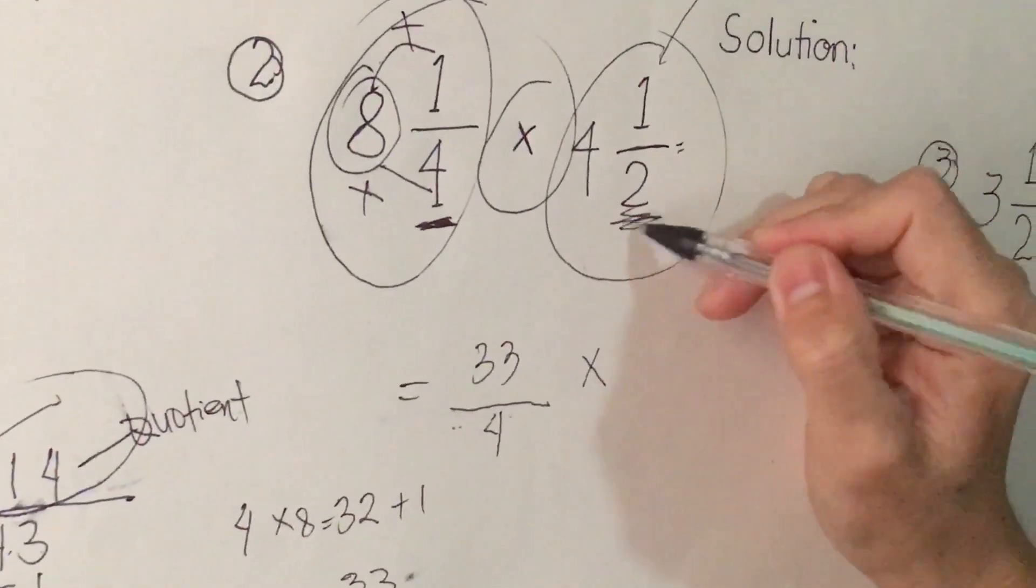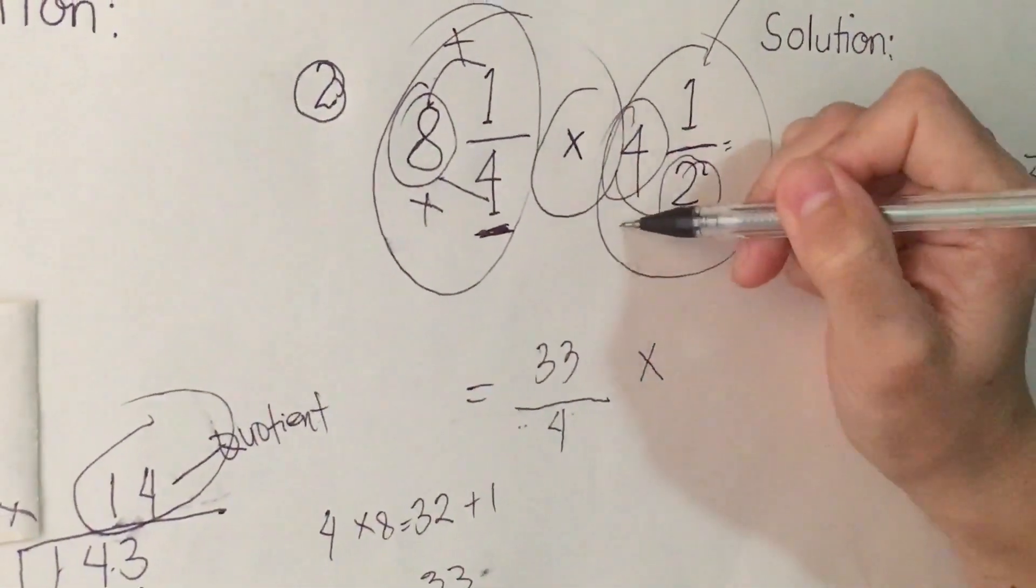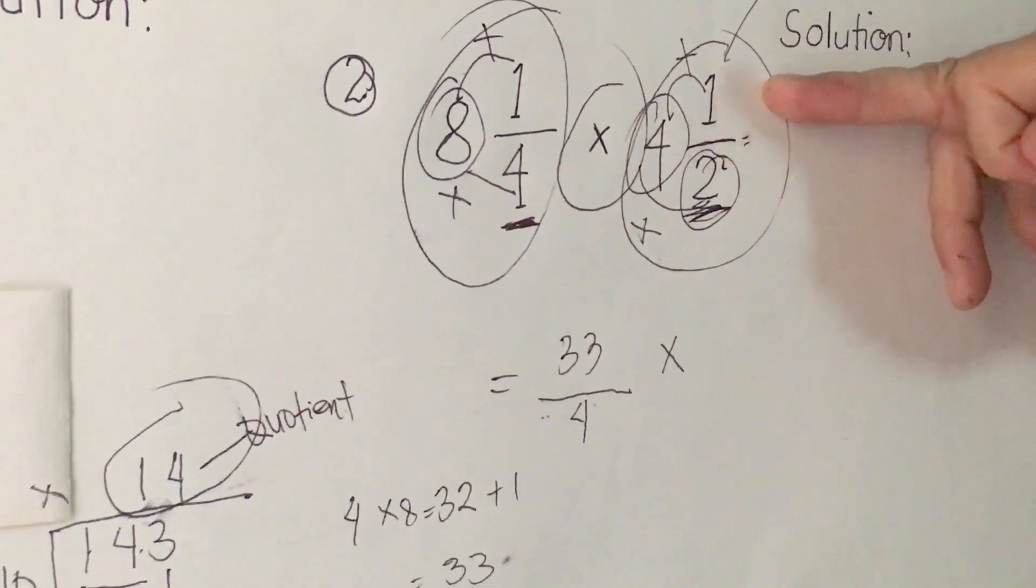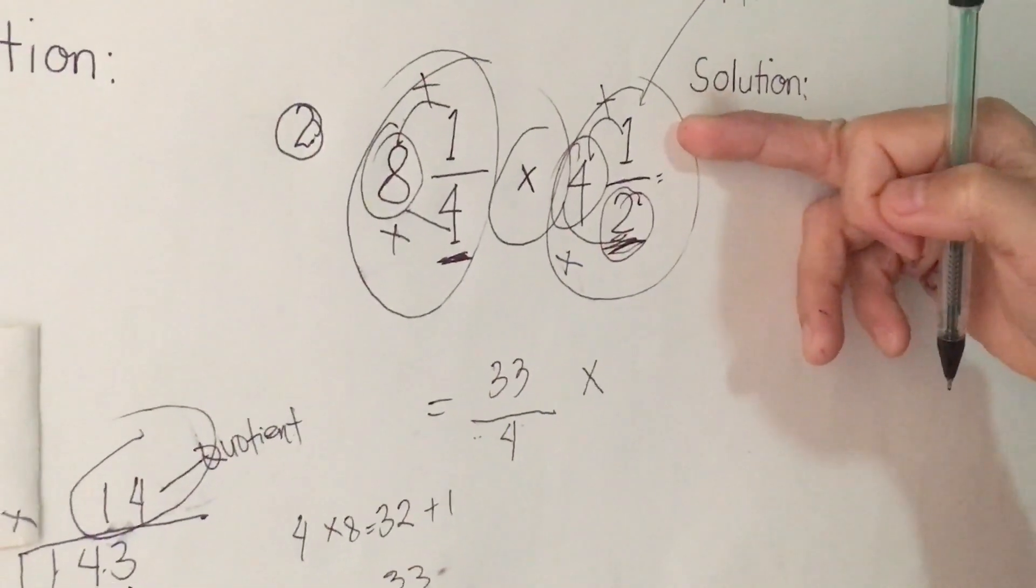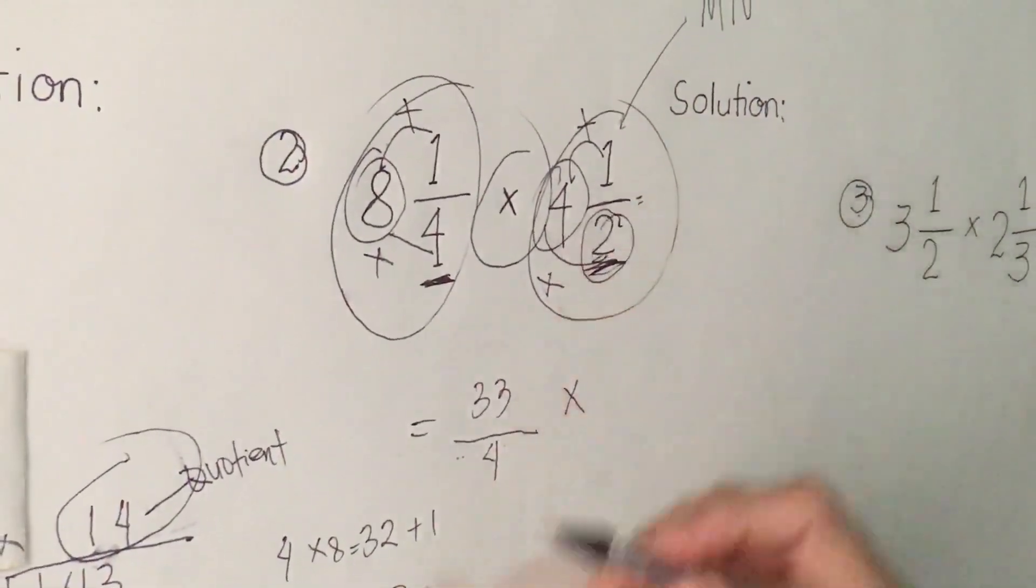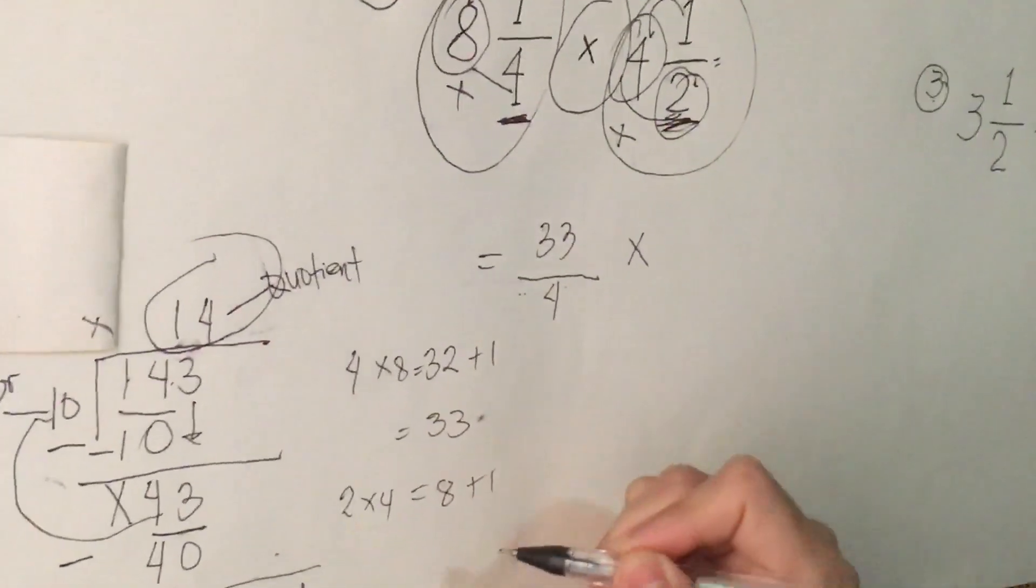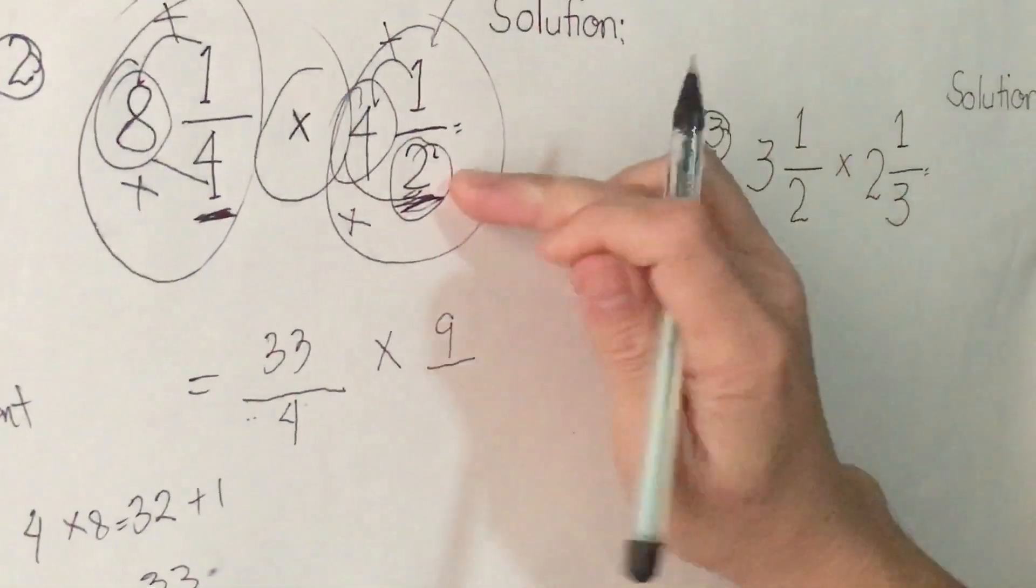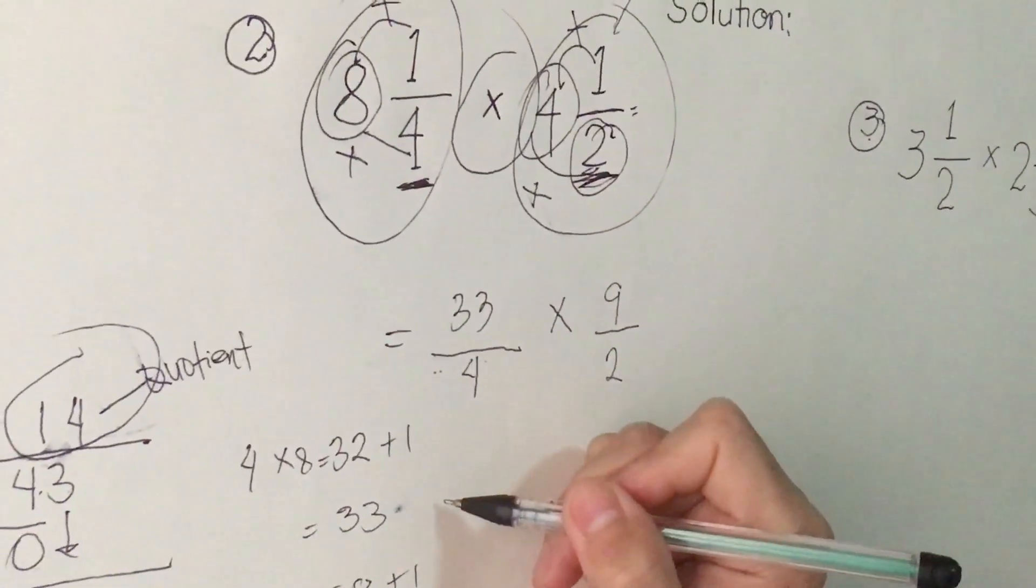Next is second denominator, which is 2, and our number is 4. We multiply that, and then last for our second fraction numerator, which is 1. It's clear. We are going to multiply 2 times 4, 8, plus 1, it's 9. So we're going to write here 9, then the denominator 2.